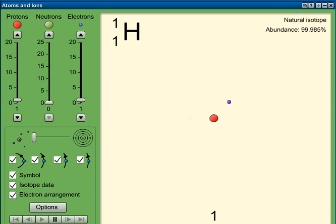This is the simplest of all the elements, hydrogen. On the screen you can see a diagram of a hydrogen atom. It's very simple - it has a nucleus here in red, which is just a single proton, and traveling around it is a single electron.